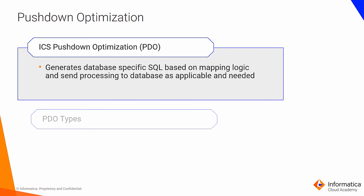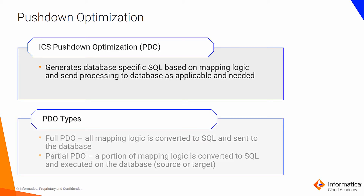There are two types of pushdown optimization. Full PDO, where all the mapping logic is converted to SQL and sent to the database — we will focus on this type in our module. Partial PDO, where a portion of mapping logic is converted to SQL and executed on the database, which could be either the source or the target.